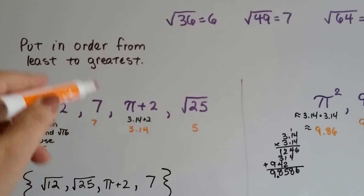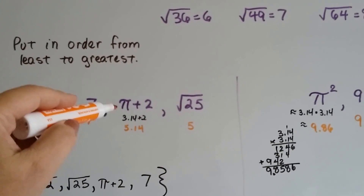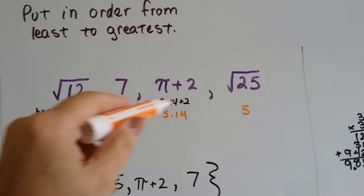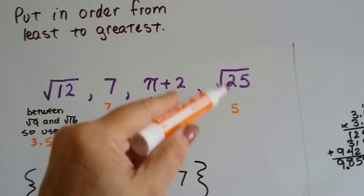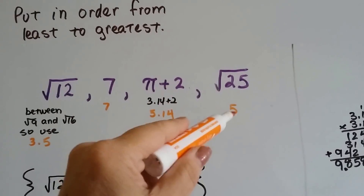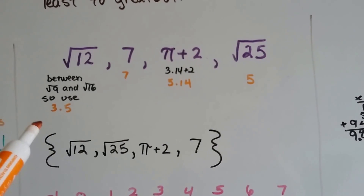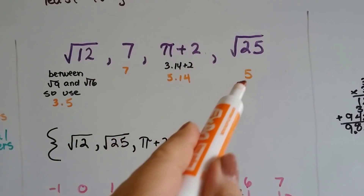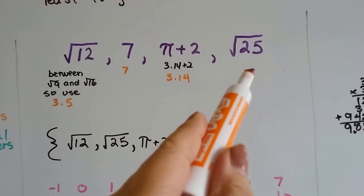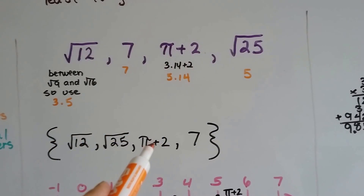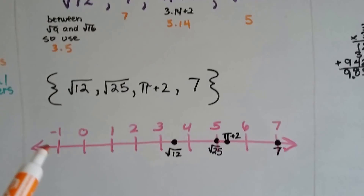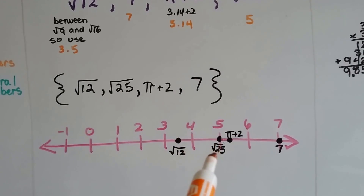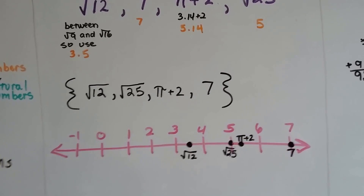7 is easy — it's already there, it's just an integer, a whole number. And pi plus 2 would be approximately 3.14 plus 2, so we say it's about 5.14. And the square root of 25 is 5. So now we can put them in order: the smallest is the square root of 12 — about 3.5 — first. Then the square root of 25 which is 5, then pi plus 2 at about 5.14, and then 7. We can chart them on a number line in that same order.